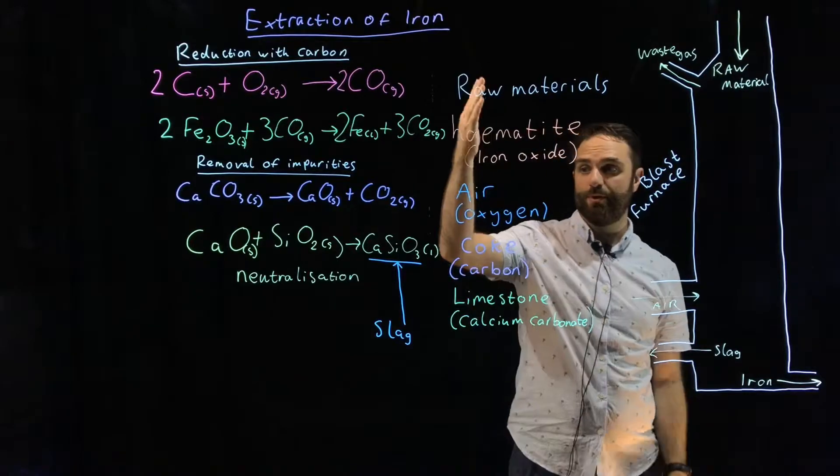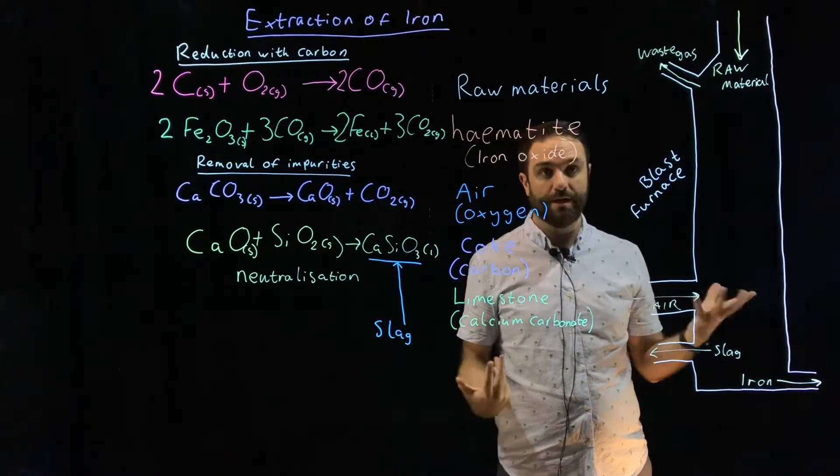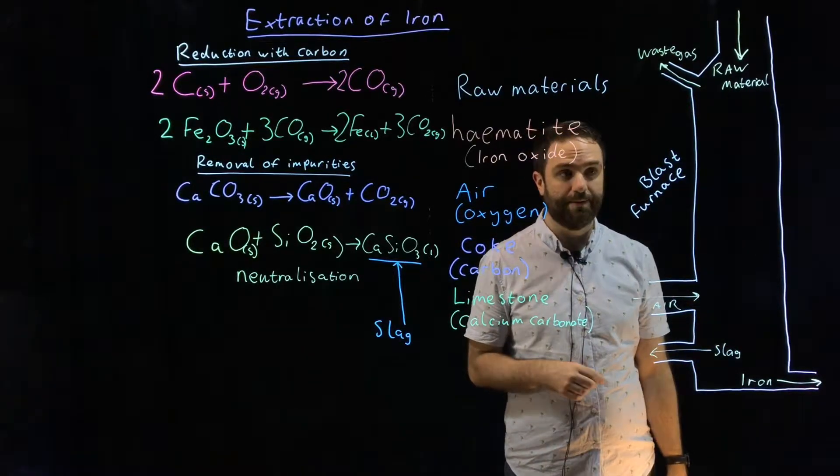At the top we put all of our raw materials except air. Air is pumped in at the bottom because it's hot and it's going to rise up through the rest of the material and cause these reactions to happen.